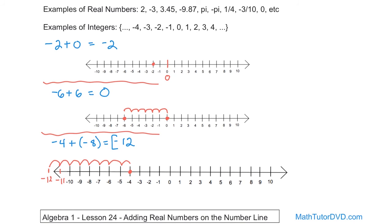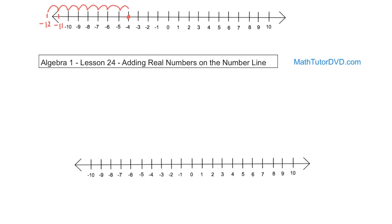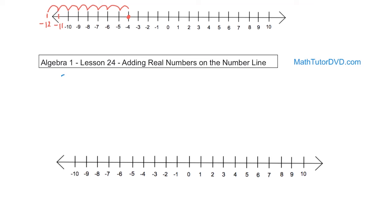Let's do one more problem. We're going to add 3 plus 4 — an incredibly difficult problem. We look at the first number, positive 3, find it on the number line, and then add positive 4, which means we move 4 units to the right. Counting 1, 2, 3, 4 — we land on 7. That's the final answer. So you start at the first location; if you're adding a positive number, move right that many units; if adding a negative number, move left that many units.